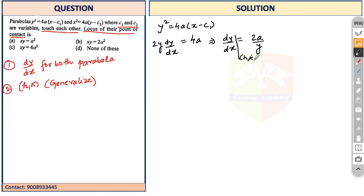at point (h, k), so we substitute in our dy/dx expression which becomes 2a/k. Now let's do the same for the second curve: x² = 4a(y - c₂). The derivative with respect to x will be 2x